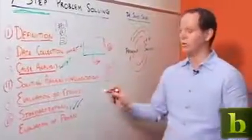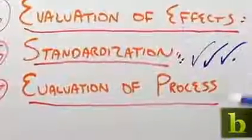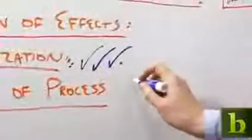After standardization, we're still not done. There's one more step, and that's step seven, evaluation of the process. Again, the idea here is to learn something based on the work we've done. When we started out, there were probably one or two people that knew this was a problem.